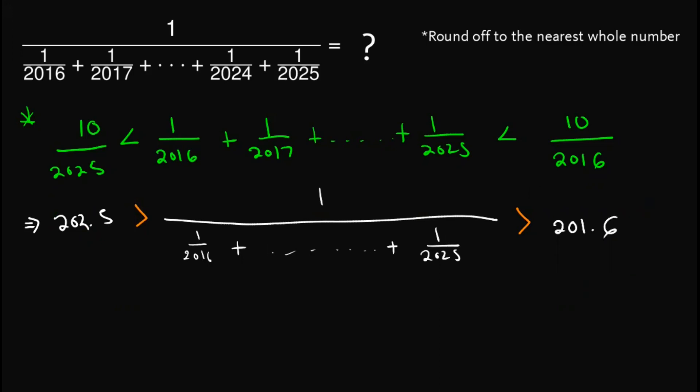And so, given this inequality, since there's a note above that we round off to the nearest whole number, observe that if we set this whole into variable x to make it simpler, and it's bounded by 202.5 and 201.6, what is the only possible whole number that x can take? Clearly, it is x equals 202.